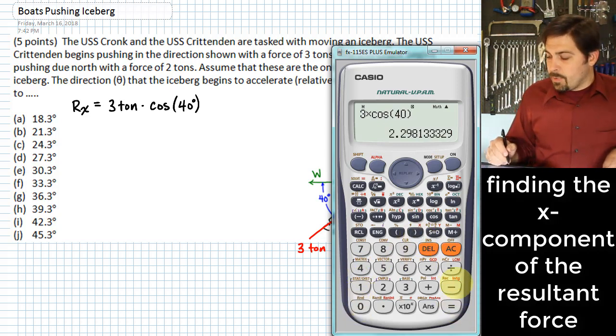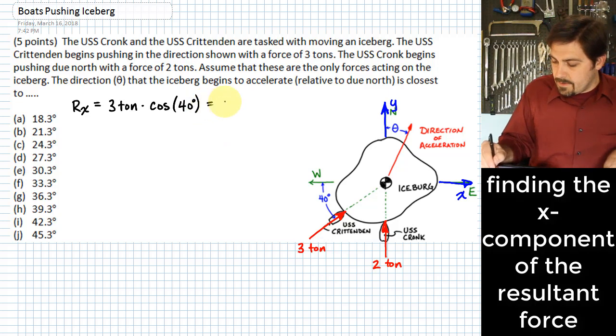So what we do here is we enter that three times the cosine of 40. That ends up giving me 2.298 tons.